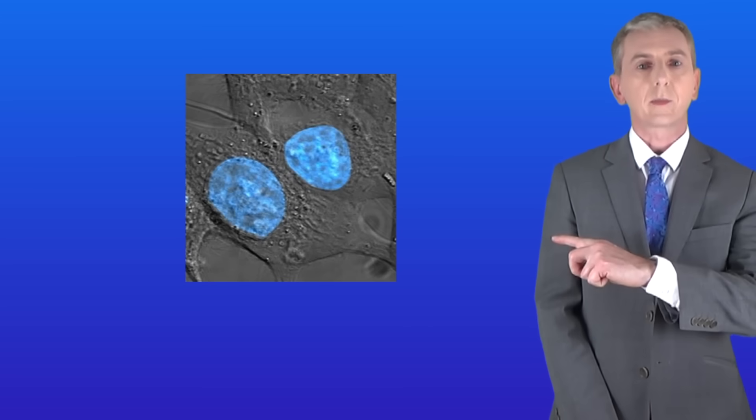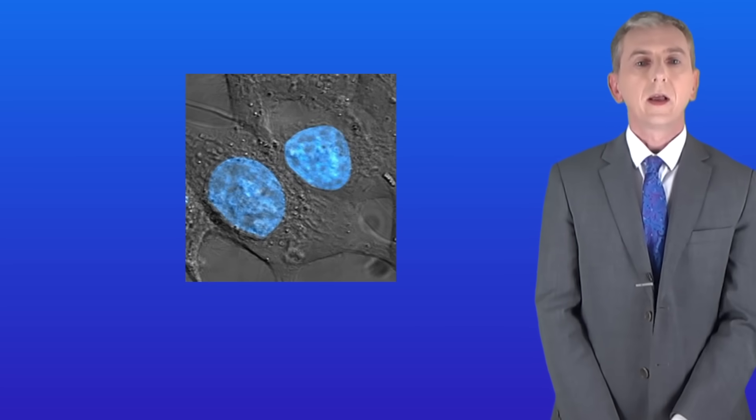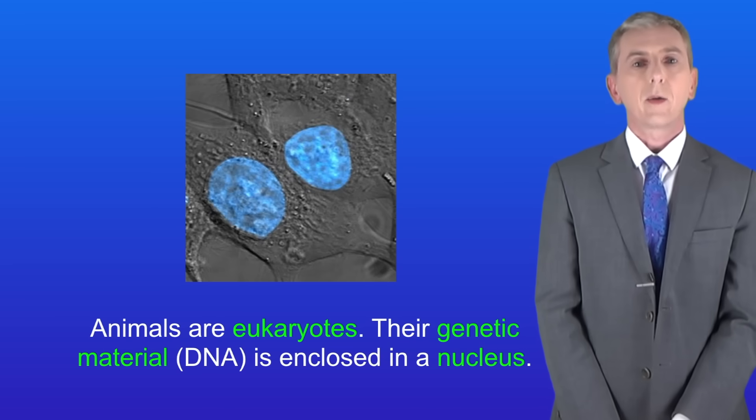I'm showing you here a picture of animal cells under a light microscope. These are human cancer cells. Now as we said in previous videos animals are eukaryotes.